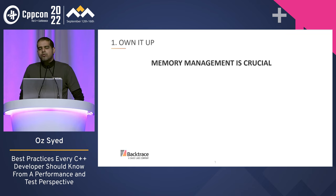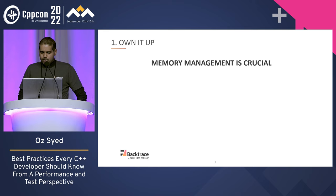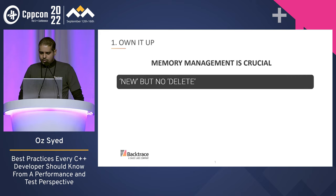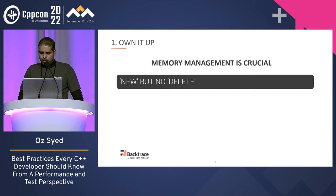If you want to write a great program that performs and doesn't pose issues down the road, then memory management is crucial. For example, if you created an object, be responsible for freeing the memory that was allocated. I usually tell C++ beginners one easy way to find this out: search for the new keyword in your project and then the delete keyword. If the occurrences don't match, then you probably are not managing your memory effectively and you've got some work to do.